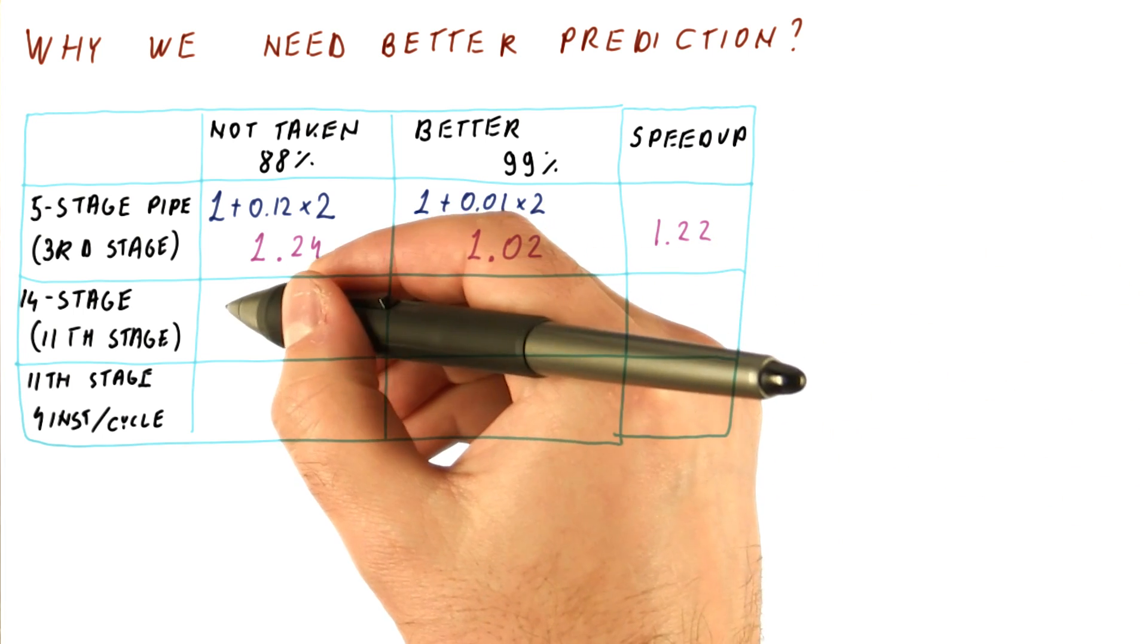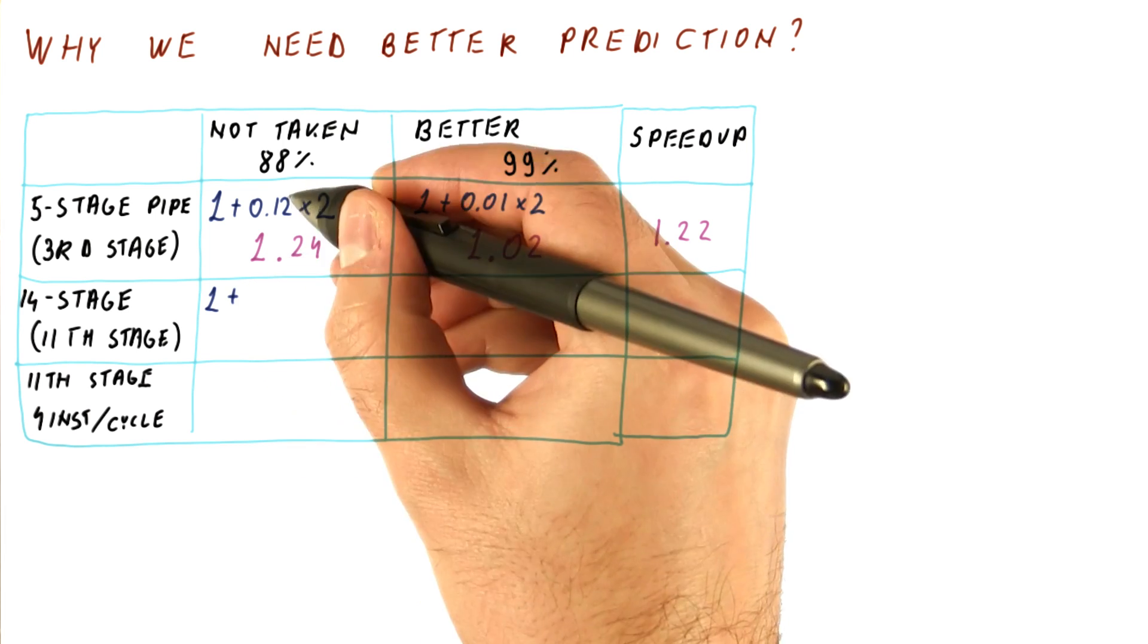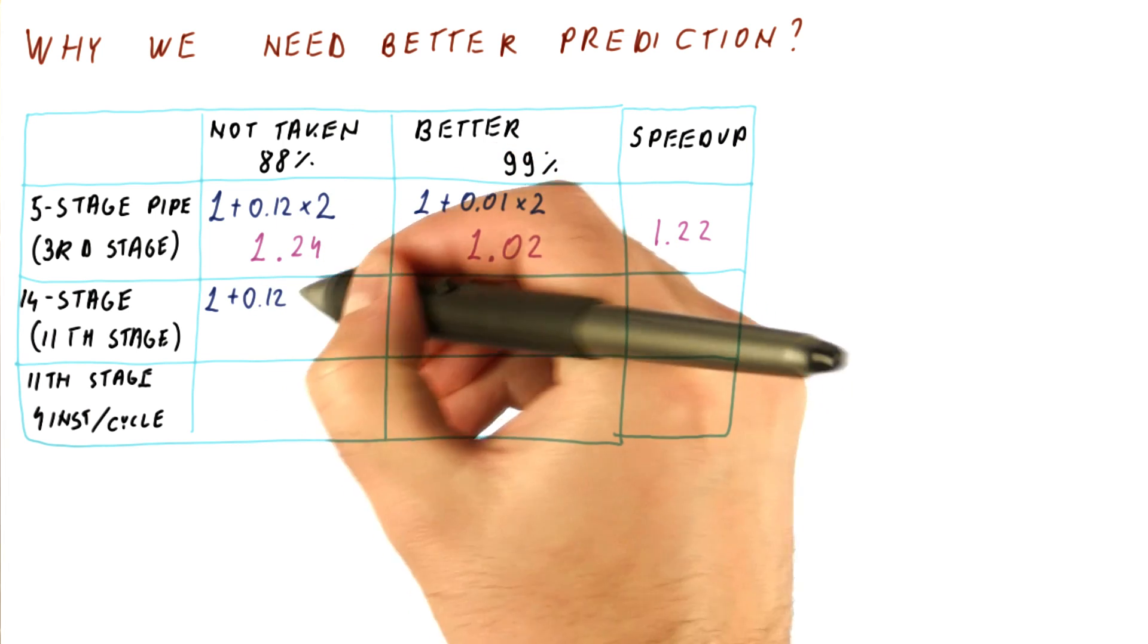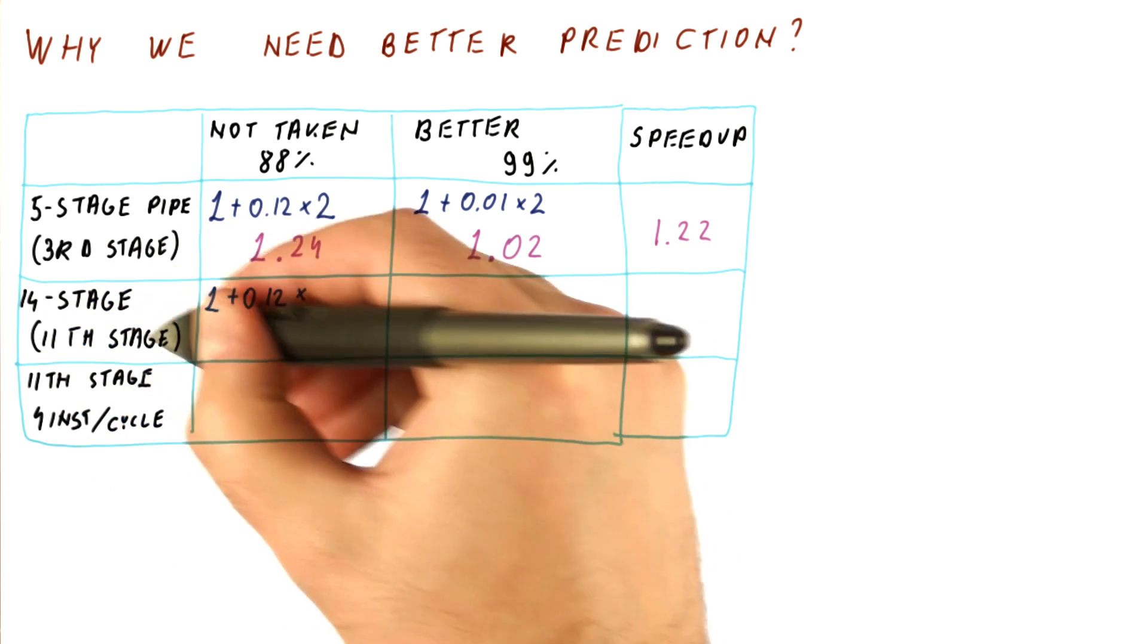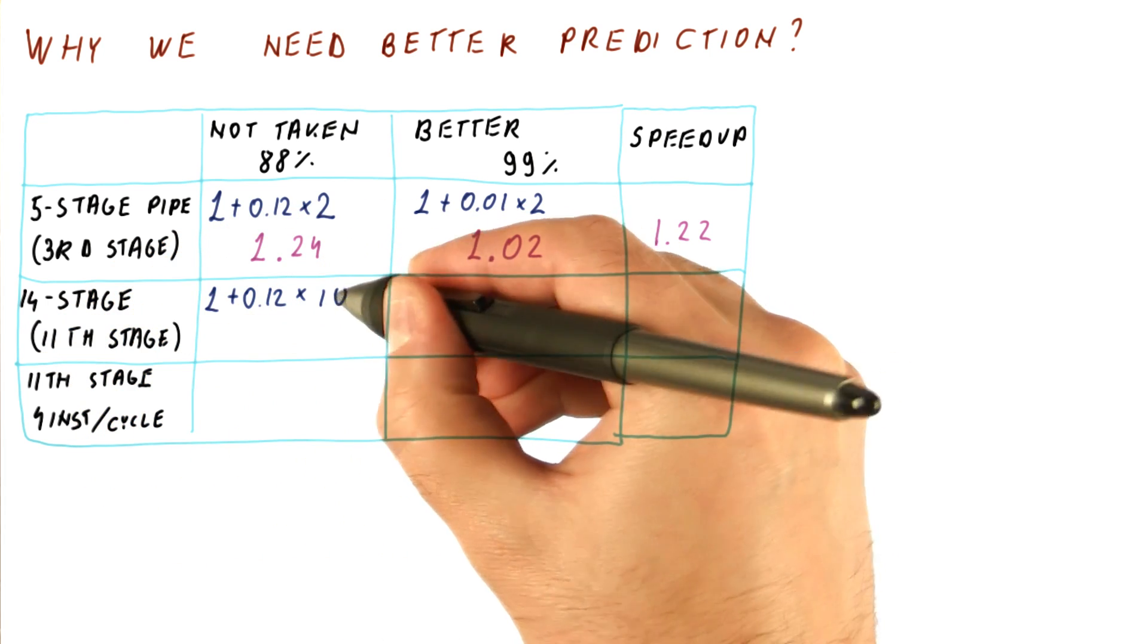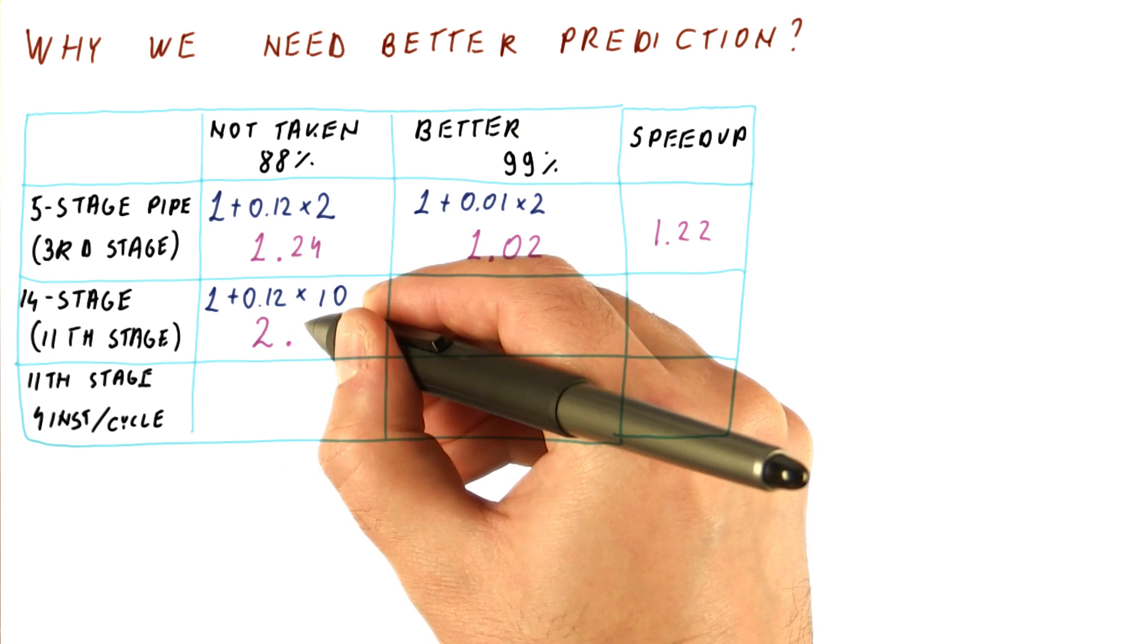But things get more interesting when we have a deeper pipeline. In that case, we have 1 plus, still 12% accuracy for not taken, but this time the penalty, because we resolve branches in 11th stage, will be 10. And we get an overall CPI of 2.2.